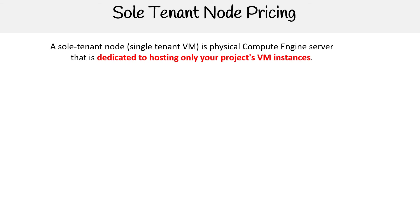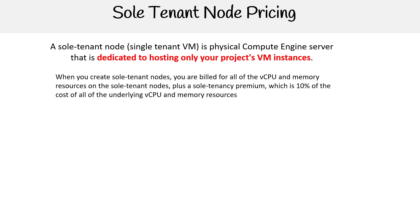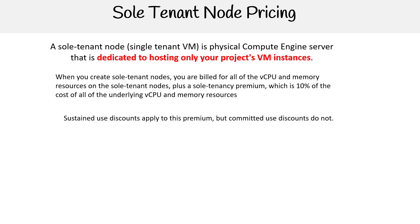You've heard me mention sole tenant many times in this course. When you create a sole tenant node, you're billed for all of the vCPUs and memory resources on the sole tenant node, plus a sole tenancy premium, which is 10% of the costs of all the underlying vCPUs and memory resources. Sustained use discounts do apply to this premium, but committed use discounts do not.